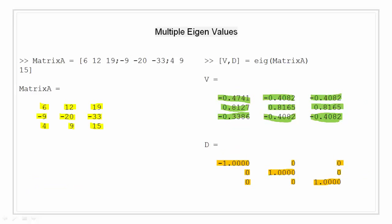Multiple eigenvalues. Some matrices do not have an eigenvector decomposition. These matrices are not diagonalizable. So let us take an example. I will create a matrix A with value 6, 12, 19, minus 9, minus 20, minus 33, and 4, 9, 15. The matrix is highlighted in yellow. I will pass this matrix to the eigenfunction and extract V and D. So as you can see, there is a double eigenvalue at lambda equal to 1. So the second and third columns of V are the same. For this matrix, a full set of linearly independent eigenvectors does not exist.